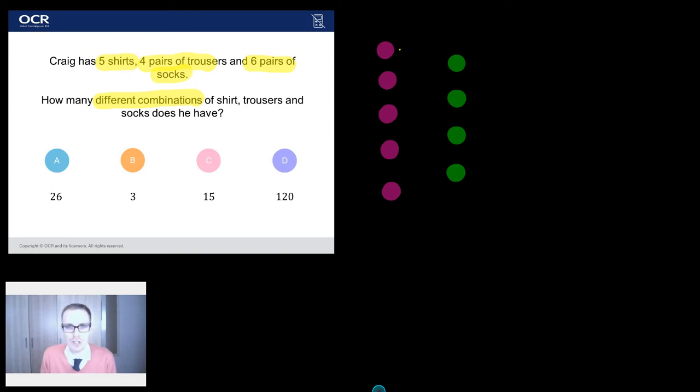Here's my first shirt. I could put that with that pair of trousers. There's one. Or I could put it with that pair of trousers. There's two. Or I could put it with that pair of trousers. Three. Or I could put it with that pair of trousers. Four. So I've already got four different combos straight away.